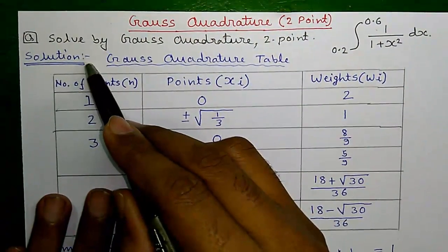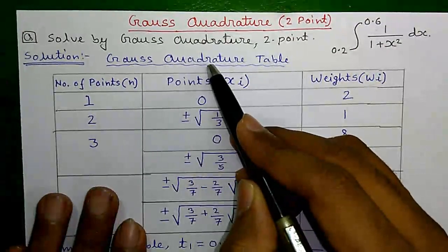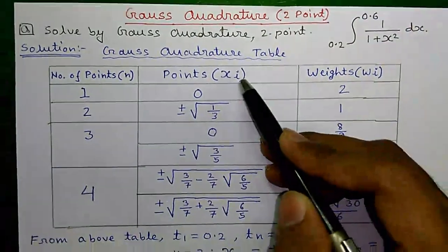So, let us proceed to the solution. First step is write down Gauss Quadrature table, which is this table.